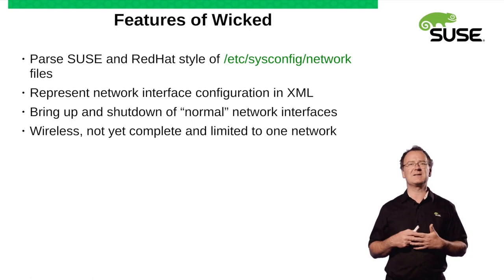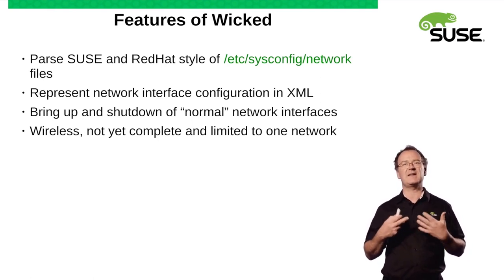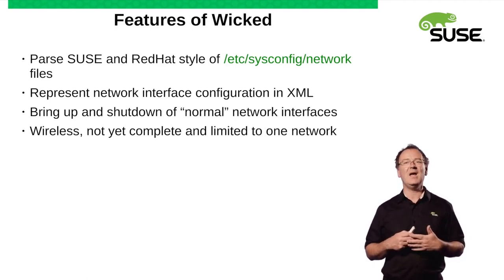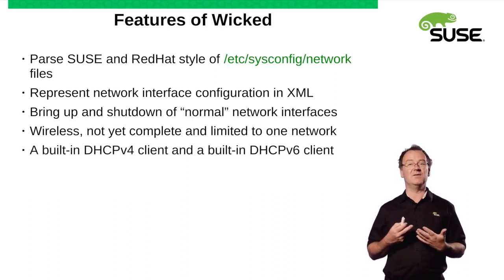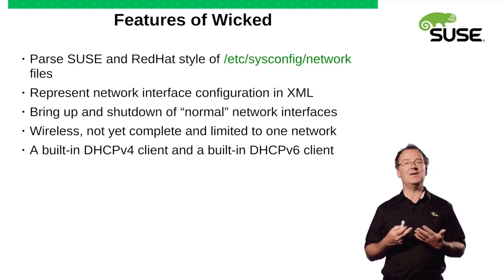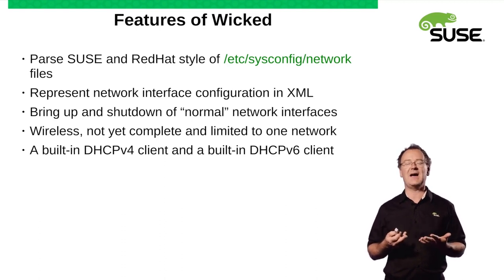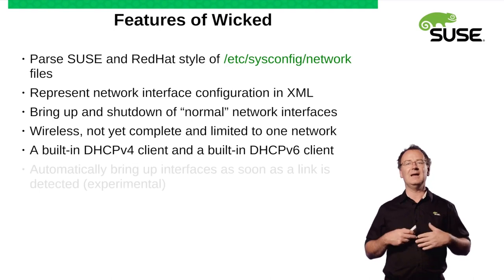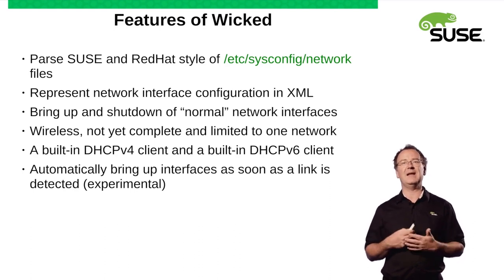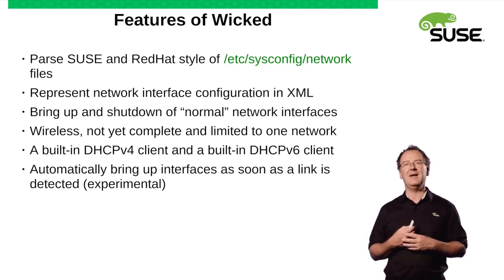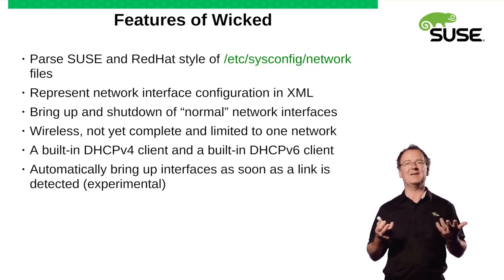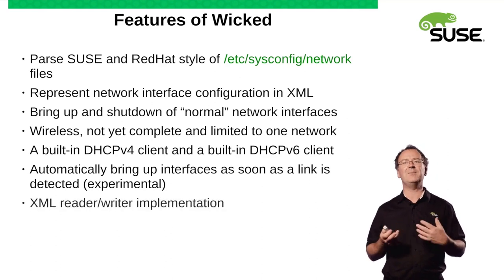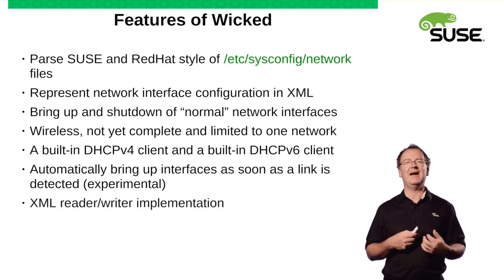The other thing as well is it is aimed a little bit at people who are using SUSE Linux Enterprise as a desktop rather than as a server. It has a DHCP version 4 client built in and it's also got a DHCP version 6 client built into it as well. So it's able to auto-configure DHCPv6 addresses. It will automatically bring up an interface as soon as a link is detected — so if you start up your laptop and later on plug it into an Ethernet connector, it'll come up and automatically configure it. And it's implemented as an XML reader and XML writer.